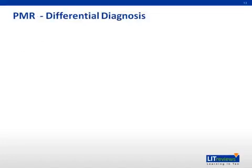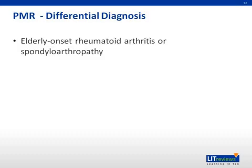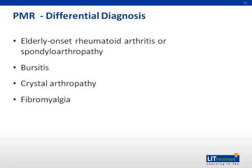What other diagnoses should be considered when patients present with symptoms consistent with PMR? One should consider elderly onset inflammatory joint disease, such as rheumatoid arthritis or spondyloarthropathy, generalized non-autoimmune bursitis, crystal arthropathies such as gout or CPPD, also known as pseudogout, fibromyalgia, and hypothyroidism.